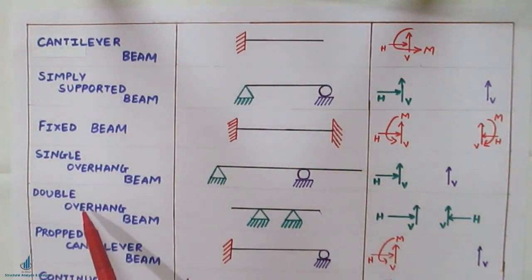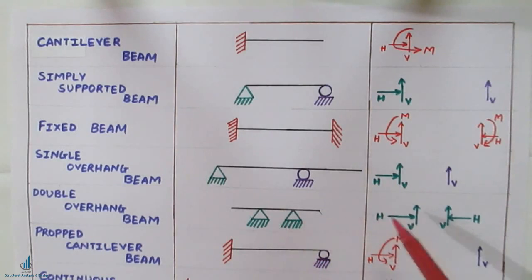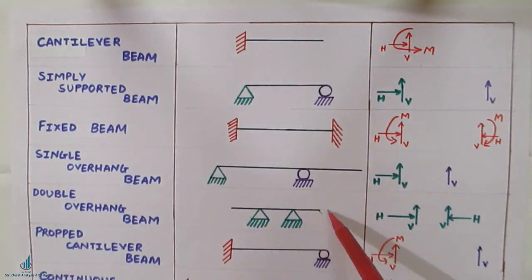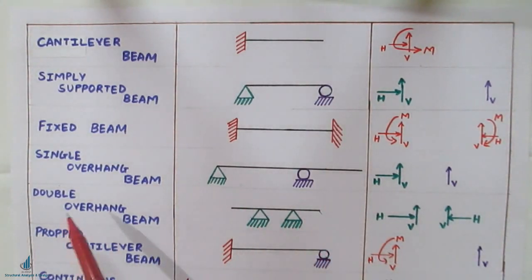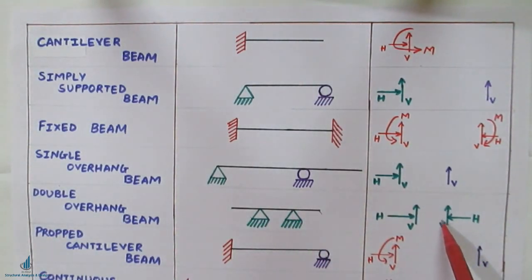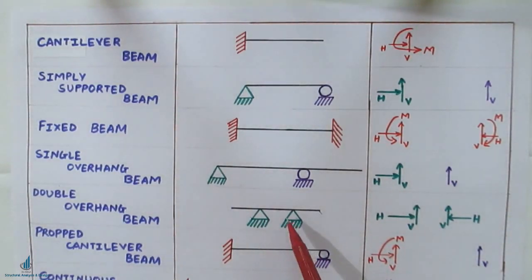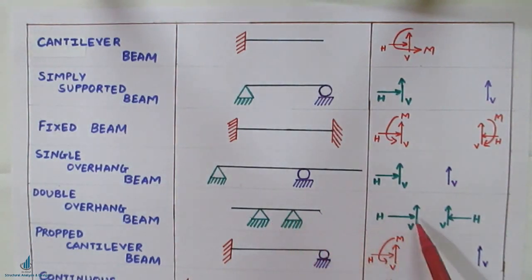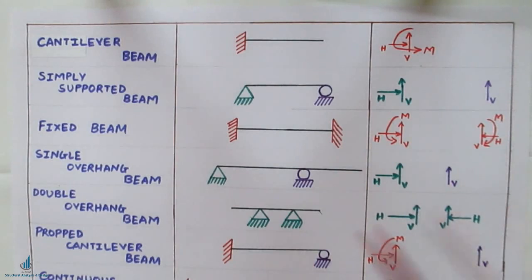Next is the double overhang beam, which has two unsupported spans, so we call it a double overhang beam. In this case two hinges are shown, meaning four unknowns. If inclined loads are applied, horizontal reactions must also be found, and it becomes an indeterminate structure.